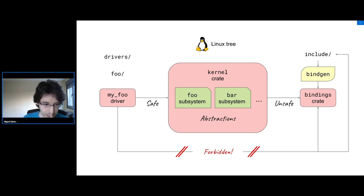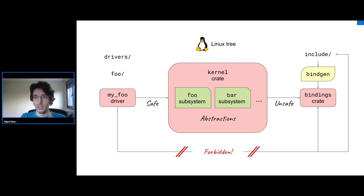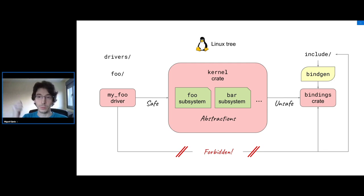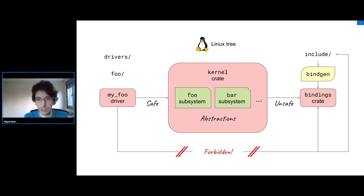On Rust ownership and kernel resource ownership: you cannot use the borrow checker on the C side. What we do is create wrapper types with constraints and invariants that will be checked by the borrow checker on the Rust side. We can use Rust references on the Rust side and have those checked, but there is no meaning in mixing Rust syntactical lifetimes with the C side's lifetimes.